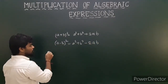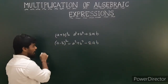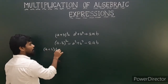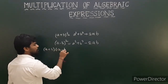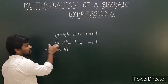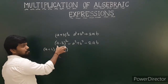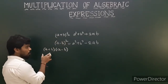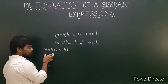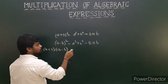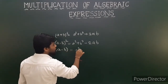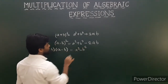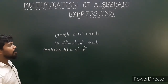The third identity: a plus b into a minus b. Now, a plus b into a minus b you can write as a square minus b square. This is the third identity.